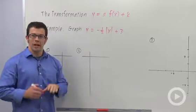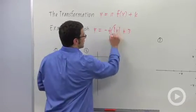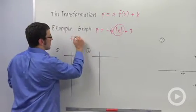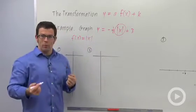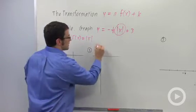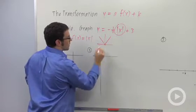Now first you want to identify what parent graph is being transformed. And here it's the function f of x equals the absolute value of x. And so it helps to remember what the shape of that graph is. Absolute value looks like this, it's got a little corner at the bottom.